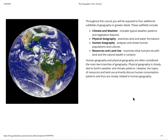Throughout this course, you'll be exposed to four additional subfields of geography in greater detail. These subfields include climate and weather, physical geography, human geography, resources, and land use. Climate and weather includes tropical weather patterns and vegetation features. Physical geography examines land and water formations. Human geography analyzes human populations and cultures. Resources and land use examines what humans do to land and the natural wealth it contains. Human geography and physical geography are often considered the main two branches of geography, and physical geography is closely tied to Earth's weather and climate patterns.